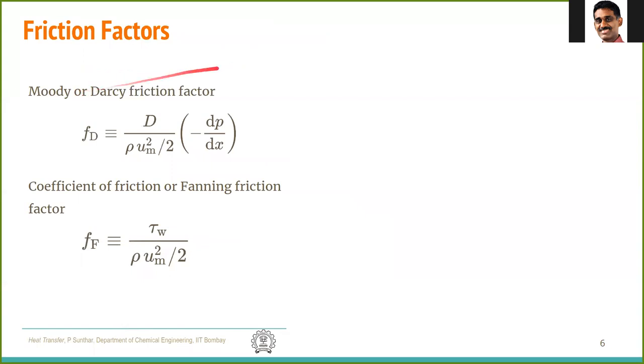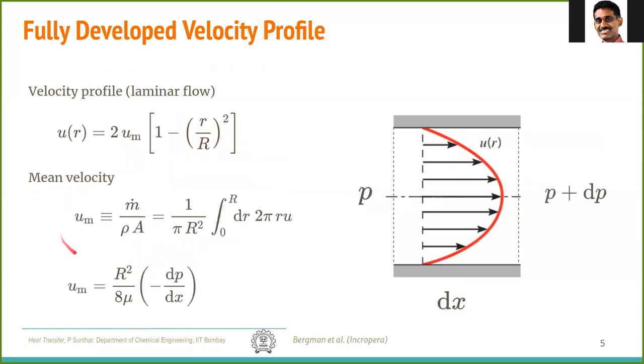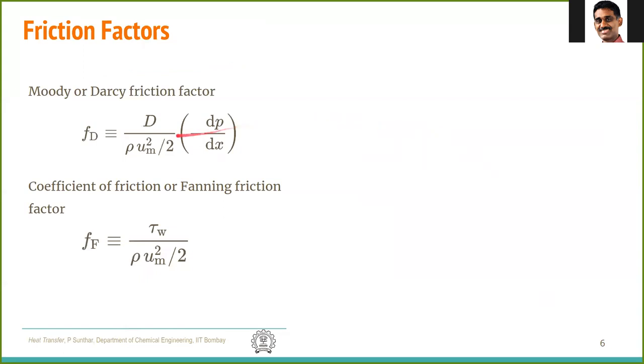You might also have studied about friction factors, which is essentially a measure of the gradient of the velocity at the surface, which is also equivalent to measure of the pressure gradient. So there are two commonly used friction factors, Moody or Darcy and Fanning. This is used in mechanical engineering literature, and Fanning friction factor is used in chemical engineering literature.